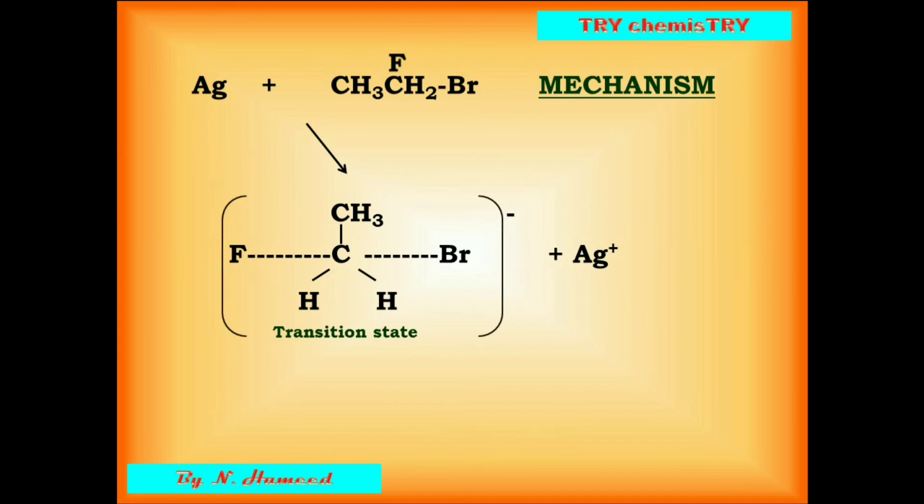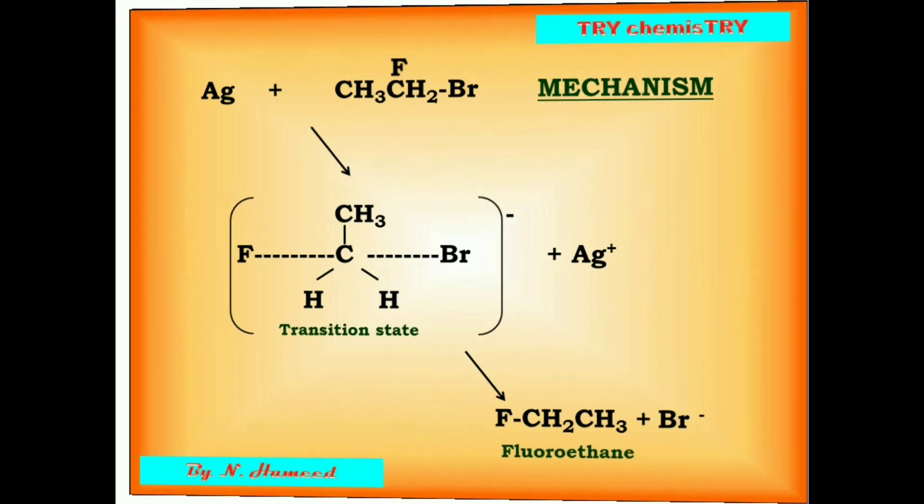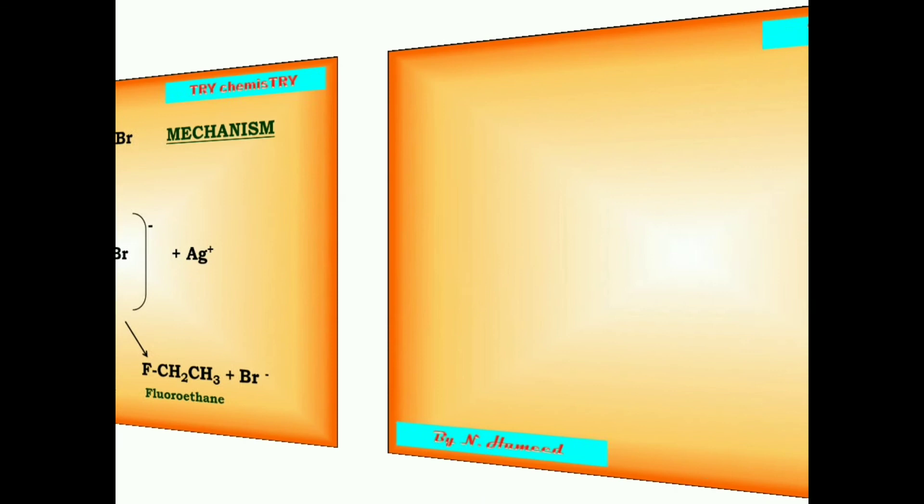Finally, the bromine is cleaved from the alpha carbon. We can get the product fluoro ethane with removal of bromide ion.